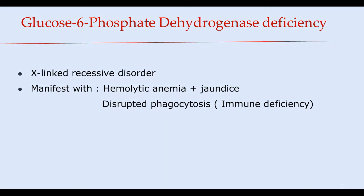The most high yield pathology related to the hexose monophosphate shunt is glucose-6-phosphate dehydrogenase deficiency. Glucose-6-phosphate dehydrogenase deficiency is an X-linked recessive disorder.